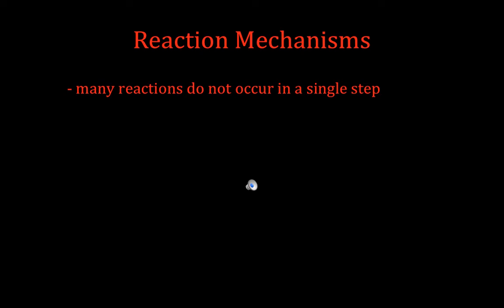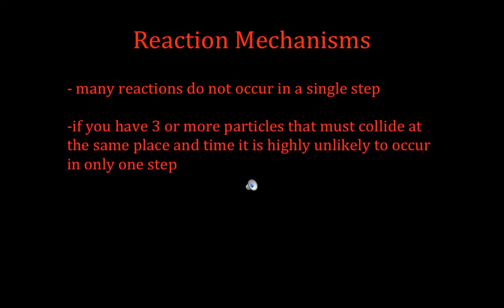So it turns out that many reactions do not occur in a single step. A balanced chemical equation can often give a misleading idea about what's actually going on in the reaction. If you see that you have three or more particles, according to an equation, that have to collide at the same time and place, it's very unlikely that will happen in one step. So if you look at your coefficients, and if it's not one of this material and one of another material getting together, let's say it's two and one, often more than one step is going to be involved.